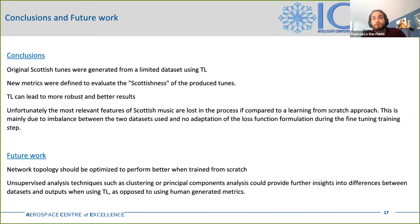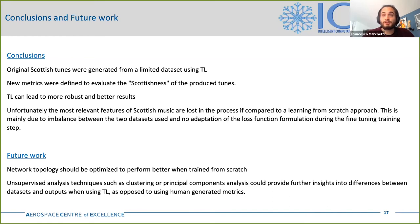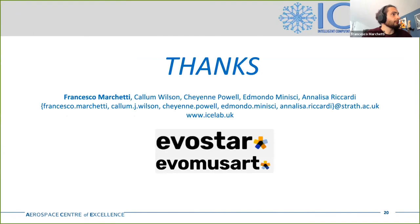In conclusion, we've shown how to use a GAN model to produce artificial Scottish music and the methodology used to pre-process the data. New metrics were defined that can be used to evaluate other music styles similar to Scottish music. Transfer learning was shown to be helpful in producing more robust results, but the most relevant features of Scottish music are lost in the process compared to a learning from scratch approach. This is probably due to the imbalance between the two datasets and because no adaptation of the loss function was done during fine-tuning. These issues could be addressed in future works, along with optimization of network topology to better fit a smaller dataset.